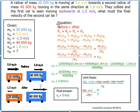A rail car of mass 20,000 kilograms is moving at 5.0 meters per second towards a second rail car of mass 40,000 kilograms moving in the same direction at 1.8 meters per second. They collide and the first car is seen moving backwards at 1.5 meters per second. What must the final velocity of the second car be?